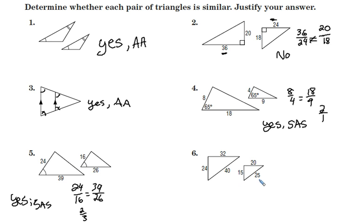Number six appears to be side-side-side. And what we need to do is match up corresponding sides and compare their ratios. 20 goes with 32. Is that equal to 25 over 40? And is that equal to 15 over 24?